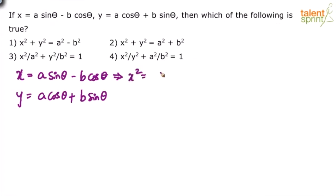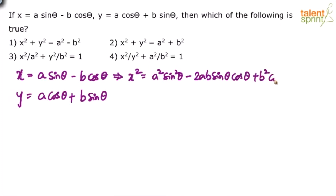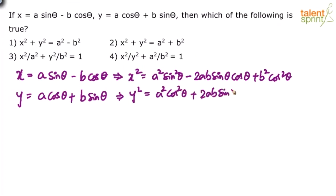Squaring both equations: x² equals a²·sin²θ minus 2ab·sinθ·cosθ plus b²·cos²θ. And y² equals a²·cos²θ plus 2ab·sinθ·cosθ plus b²·sin²θ. We are simply squaring the given equations to get x² and y².